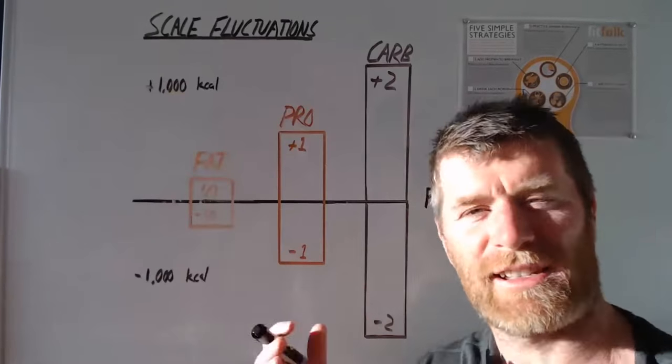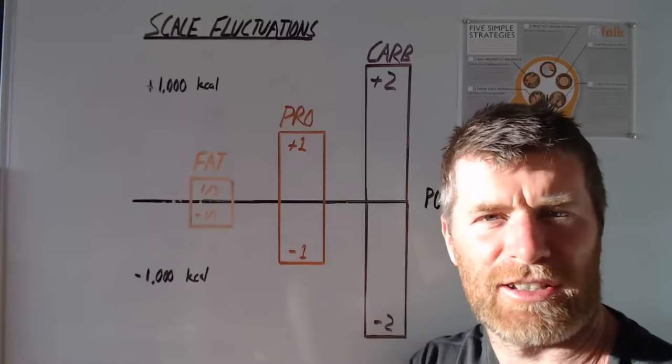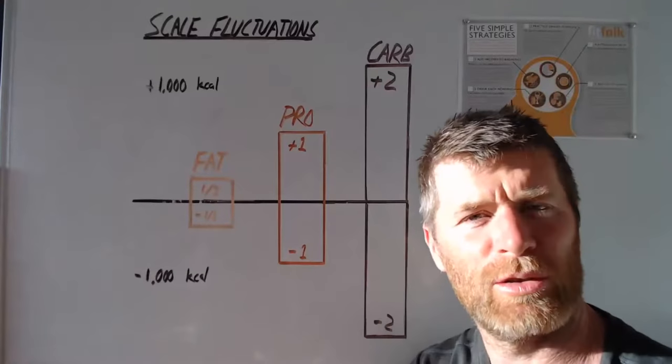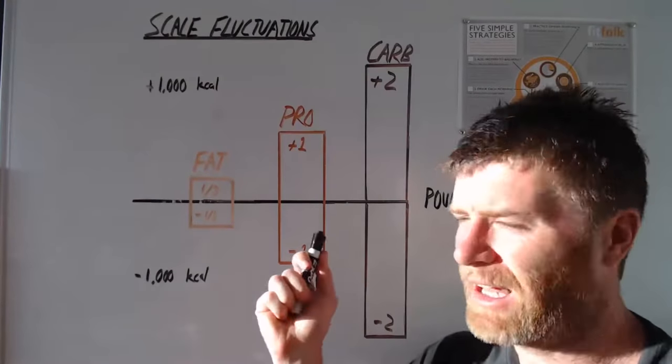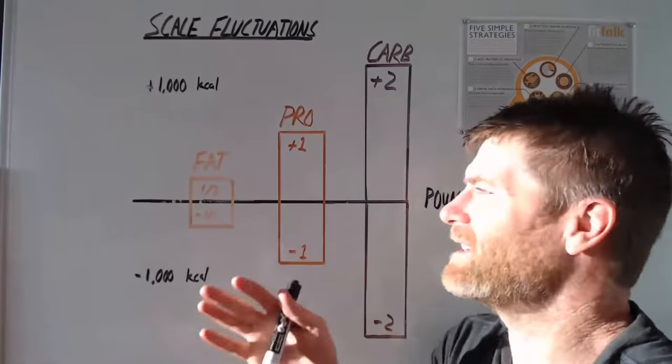In today's video we are talking about why the scale bounces around and it is Halloween here in Australia so tonight I'll be trick-or-treating, tomorrow I will be three or four pounds heavier and very little of that will be fat and you're going to understand why in today's video.